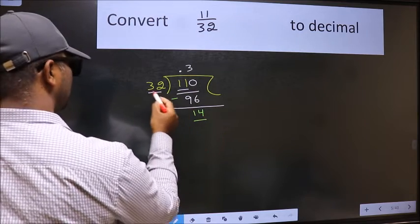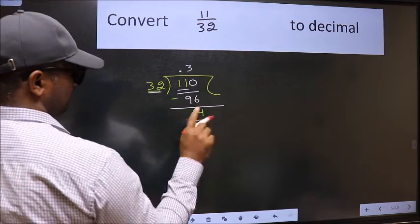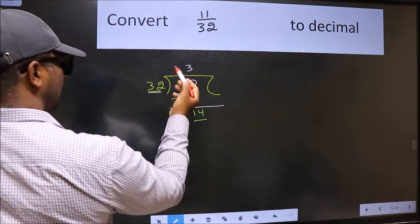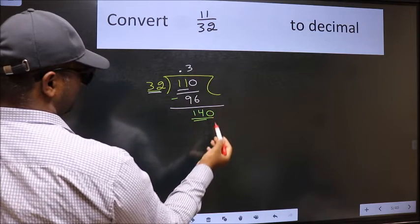Now, here we have 14 and here 32. 14 is smaller than 32, and we already have the decimal. So, we can directly take 0. So, 140.